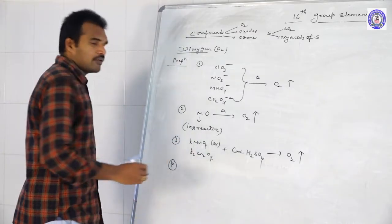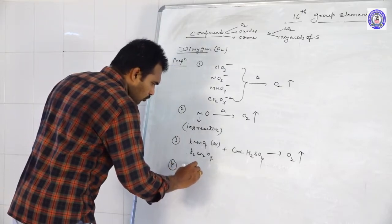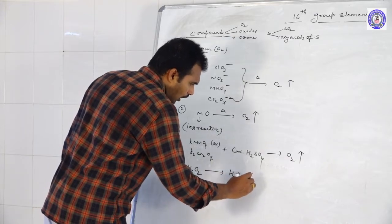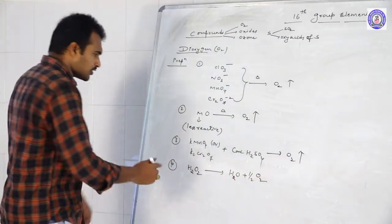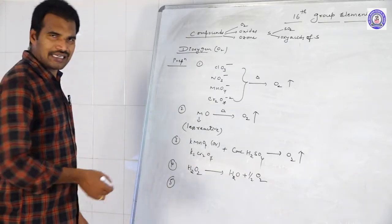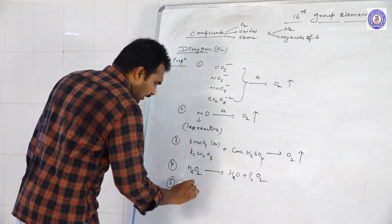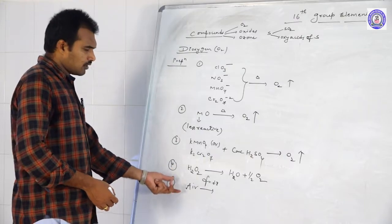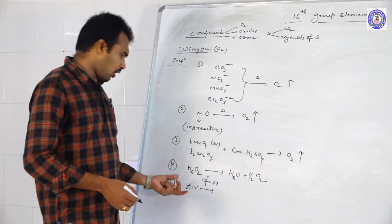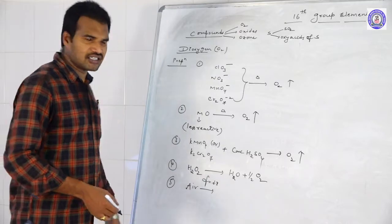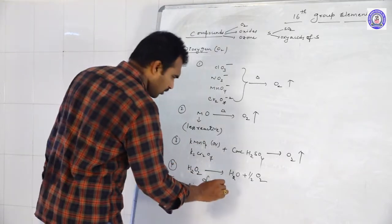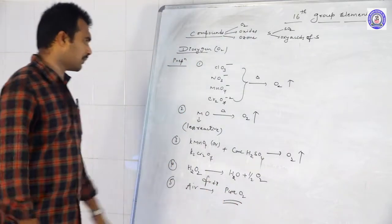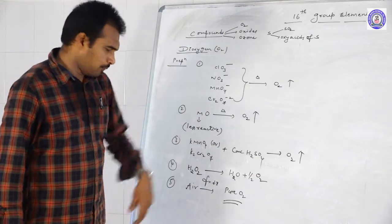The fourth method: by decomposition of H2O2. As we know, H2O2 is highly unstable — it immediately splits into H2O and O2. The fifth method, industrially, if you want to prepare Oxygen in bulk amounts, just take air. On liquefaction followed by fractional distillation, we get pure Oxygen gas. These are the five methods of preparation of Oxygen gas.